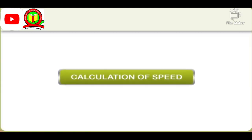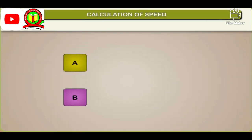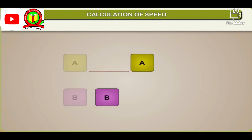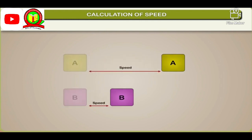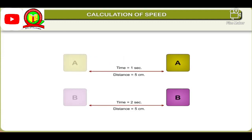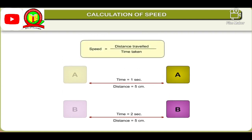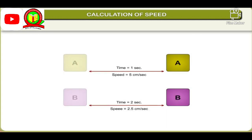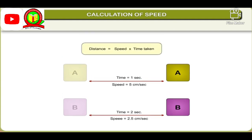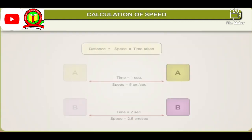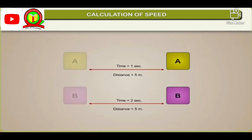Calculation of speed: We sometimes want to know how fast something is moving. Object A has a higher speed than object B. Speed is the measure of how fast an object moves. Different objects may take a different amount of time to cover a given distance. Speed is defined as the distance travelled by an object per unit time: Speed = Distance ÷ Time taken. If the speed of an object and the time are known, then distance = Speed × Time taken.